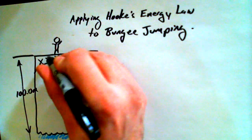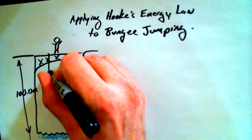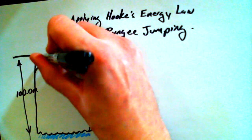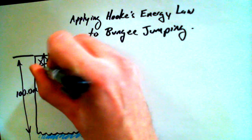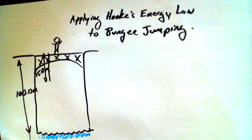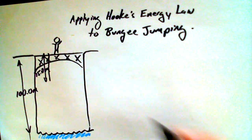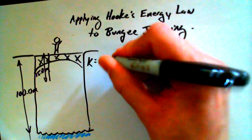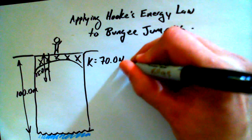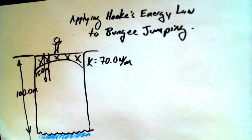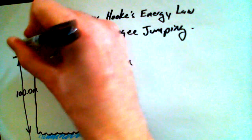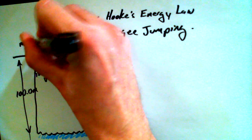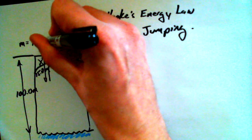The bungee cord — shown here lying loose but not attached to anybody — has a length of 15.0 meters if it's just hanging slack. There is also an elastic coefficient, a spring coefficient, of 70.0 newtons per meter for the bungee cord, and our person has a mass of 75.0 kilograms.